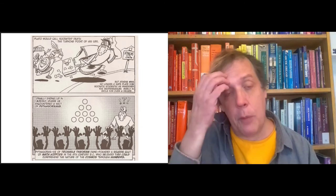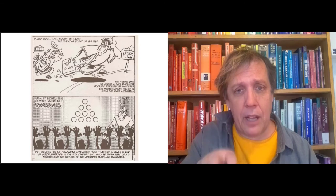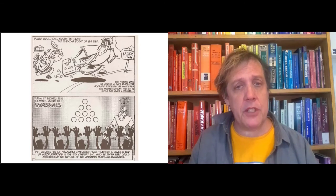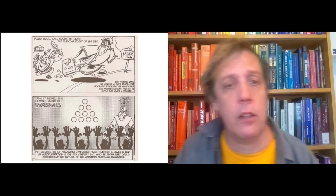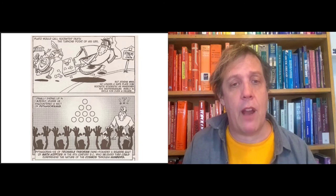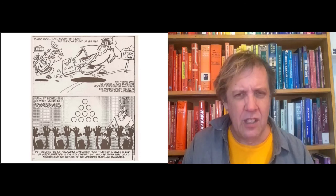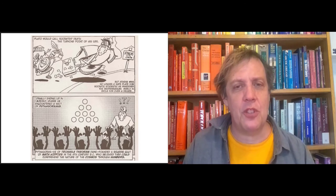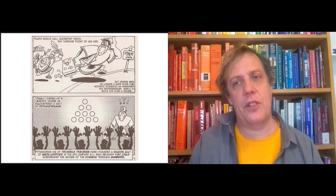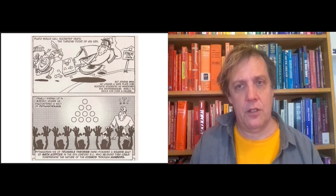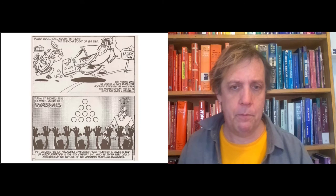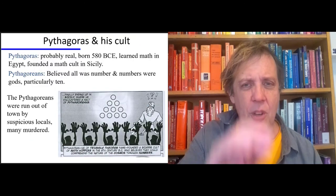The Pythagoreans worshipped the number 10 in particular, and the triangle diagram you see there made of 10 circles arranged like that, one, two, three, four, was the holy symbol for them. Well, physicists these days don't use numbers like that, but there's still this sense that you can understand the world through number.